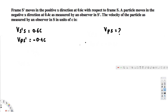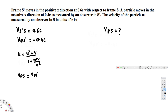To find this, we use the Lorentz velocity transformation equation: u equals u prime plus v, divided by 1 plus u prime times v over c squared. In our case, u is vps (what we want to find), u prime is negative 0.4c, and v is v_s'_s. So vps equals vp_s' plus v_s'_s, divided by 1 plus vp_s' times v_s'_s over c squared.